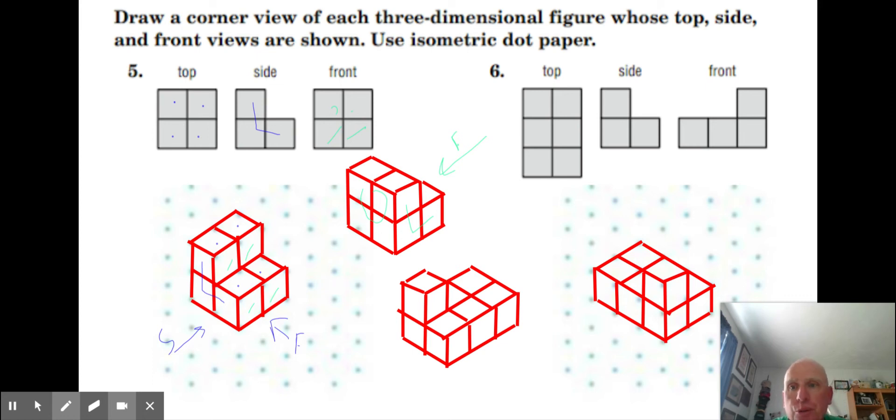Now if you notice on this one right here, we have two blocks protruding up, which is different from number six. On number six we only have like one dot protruding up here. So if we start with our top here: one, two, three, four, five, six.